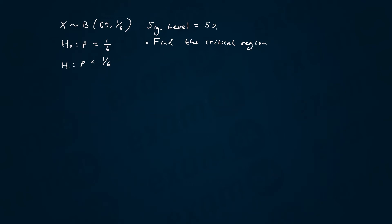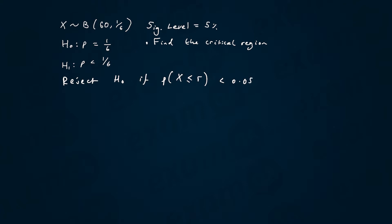We have a binomial distribution where the number of trials is 60 and the probability of success is 1 over 6. To find the critical region, after writing our hypotheses, we write the sentence: reject H₀ if the probability of getting less than or equal to r is less than 0.05. We always turn the significance level into a decimal.